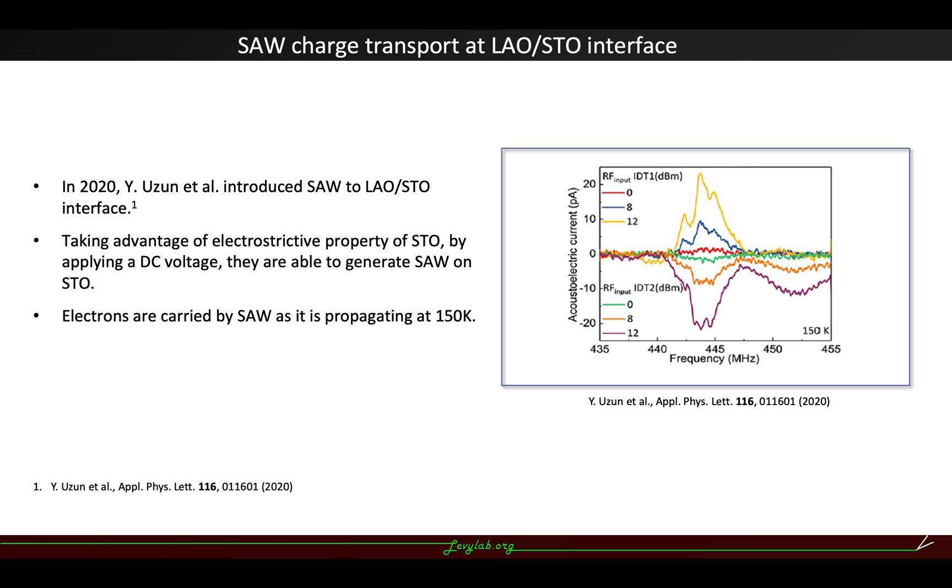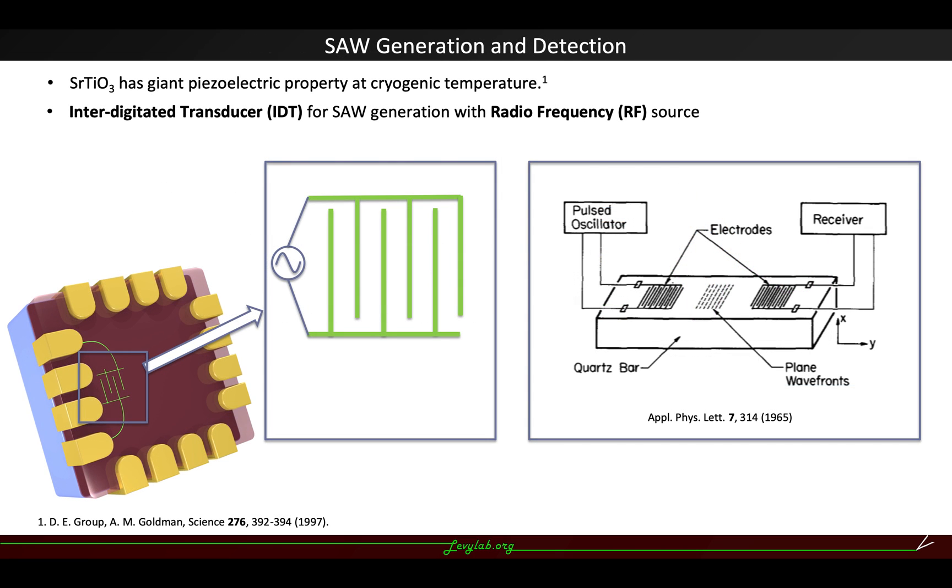And our question is, can we go to even lower temperature, such as cryogenic temperature? It is shown that strontium titanate has giant piezoelectric property at cryogenic temperature, especially lower than 10 Kelvin.